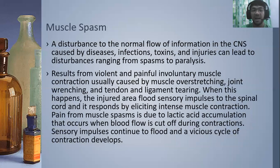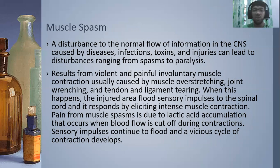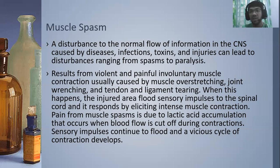Next, we go to muscle spasms. This is a disturbance to the normal function in the CNS caused by certain diseases or infections. One infection that can cause muscle spasm is tetanus. Injuries can also lead to disturbances ranging from spasms to paralysis. Sometimes electrolyte imbalances can cause muscle spasms. This results from violent and painful involuntary muscle contraction usually caused by muscle overstretching, joint wrenching, and tendon and ligament tearing. When this happens, the injured area sends impulses to the spinal cord, which responds by eliciting intense muscle contraction.